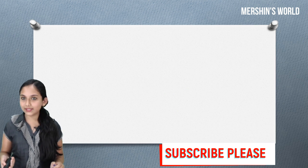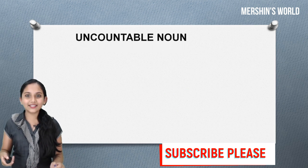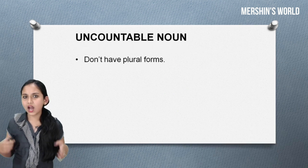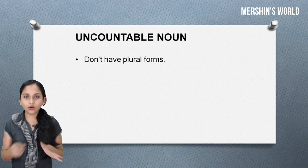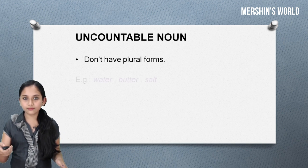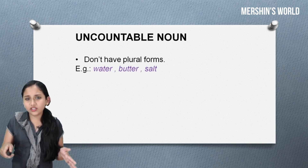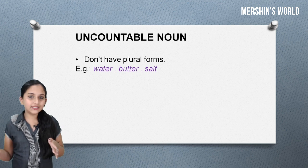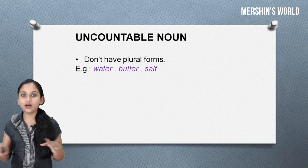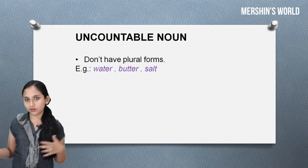Next, we'll see uncountable nouns. Uncountable nouns don't have plural forms. Examples: water, butter, salt. We can't say waters, butters, or salts.